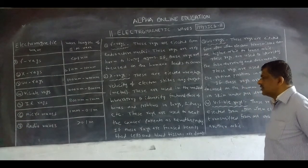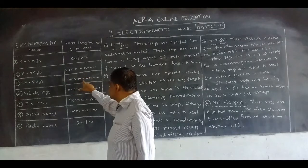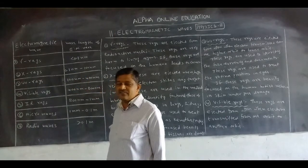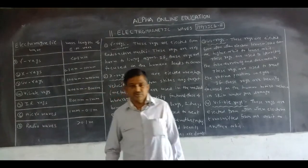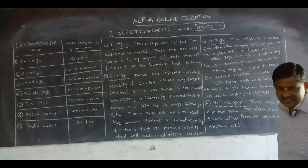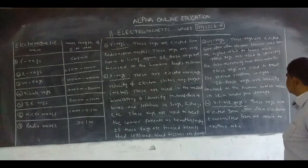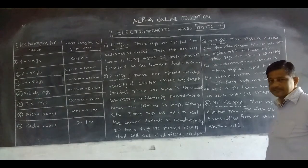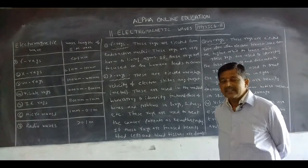After X-rays comes ultraviolet (UV) rays. Ultraviolet rays have a longer wavelength than X-rays. The wavelength of ultraviolet rays lies between 100 nanometers and 400 nanometers. UV rays were discovered by William Herschel. These rays are ejected from atoms when an electron transitions from a higher orbit to a lower orbit.